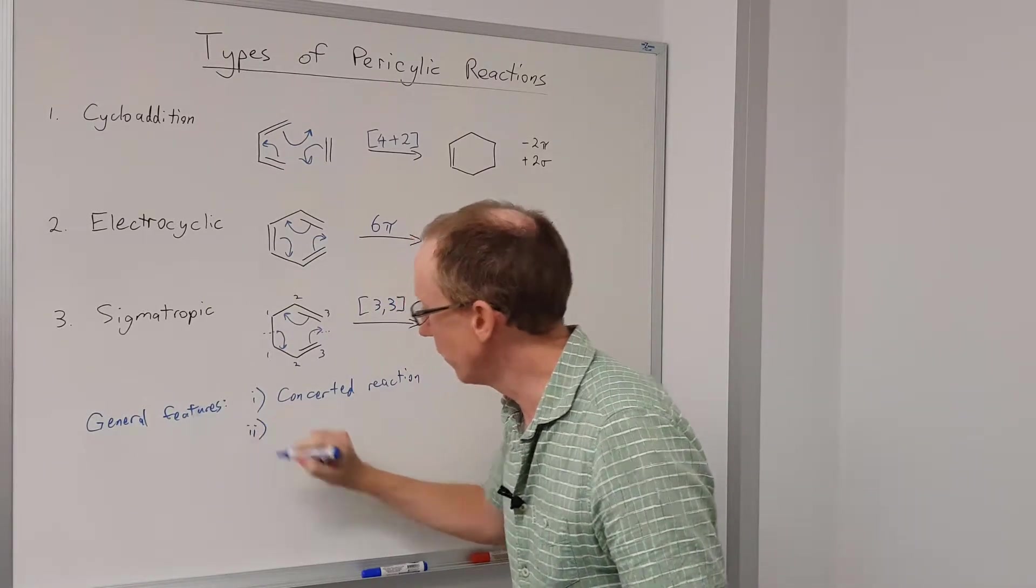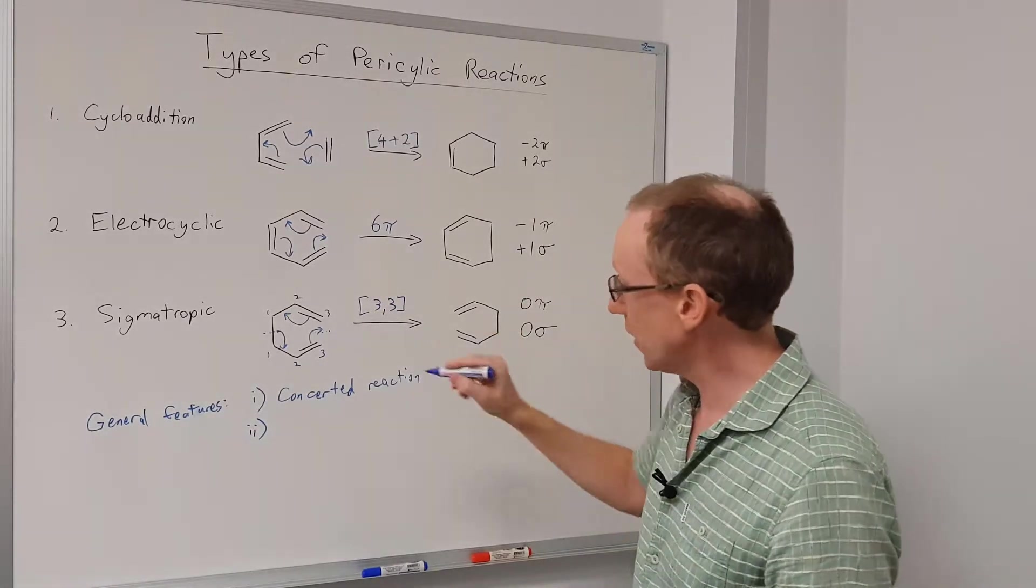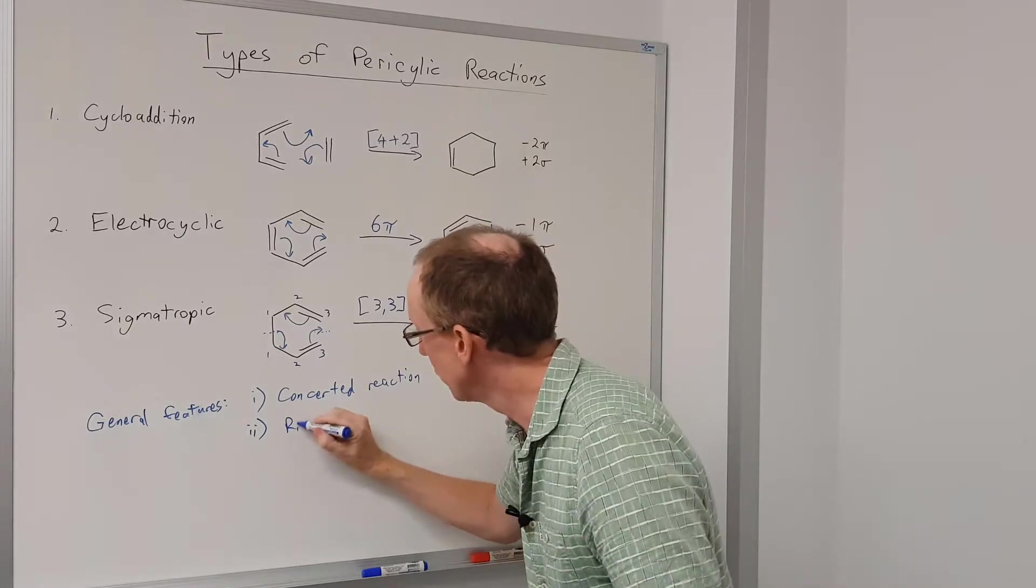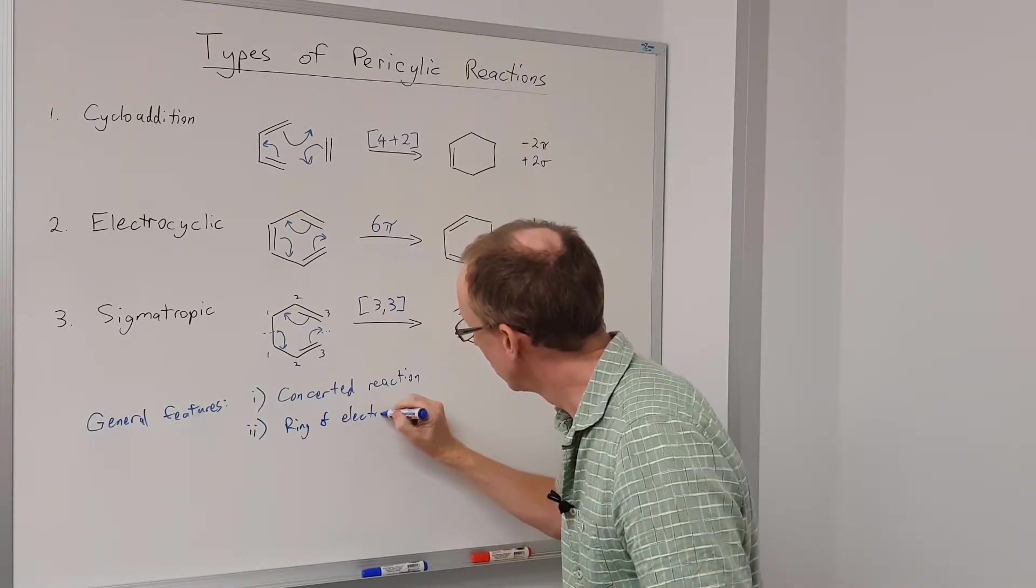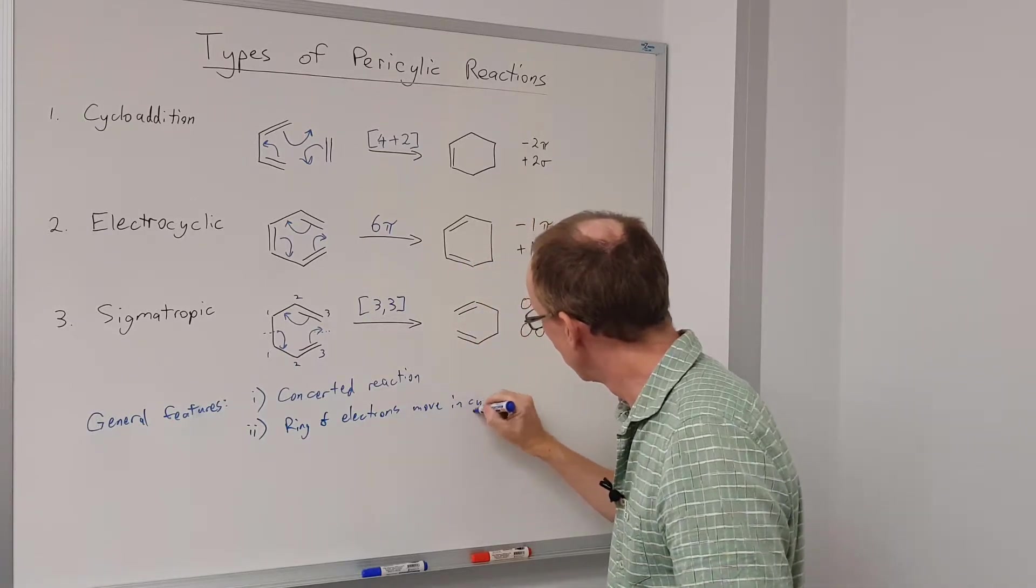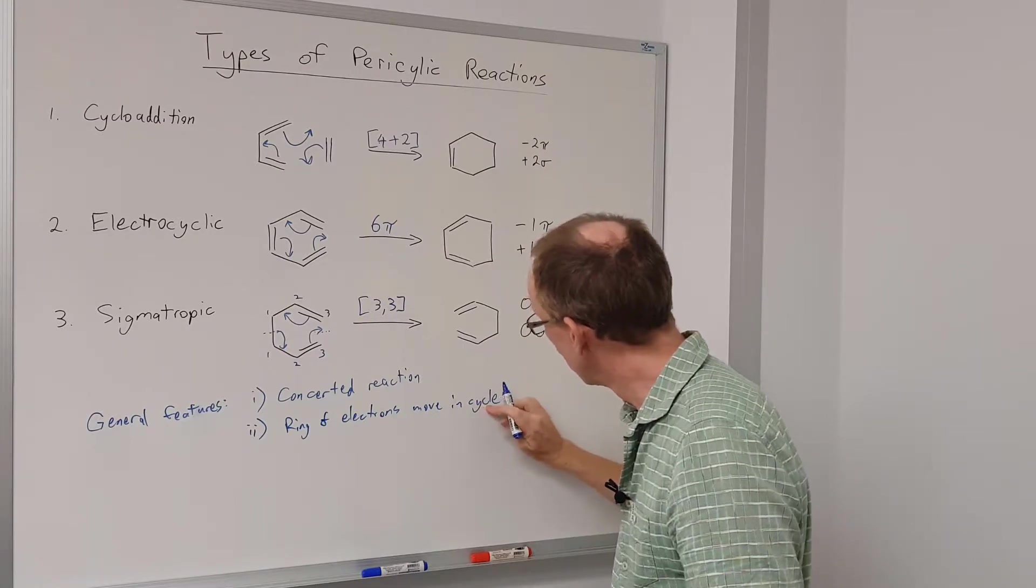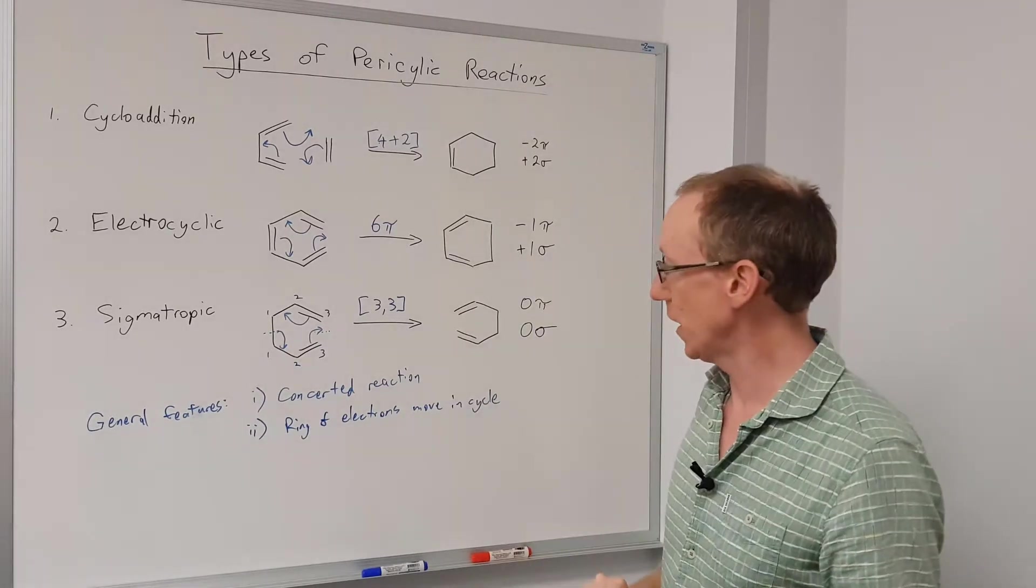The second general feature is that the mechanism involves a ring of electrons moving around in a cycle. So a ring of electrons moving in a cycle, and that's the mechanism by which the reaction takes place.